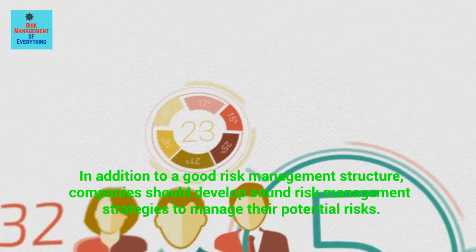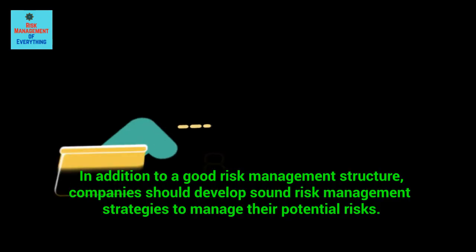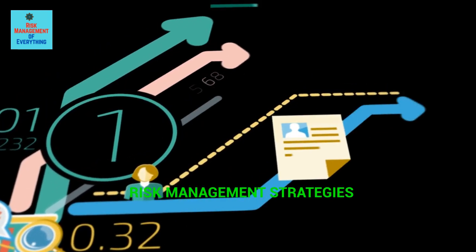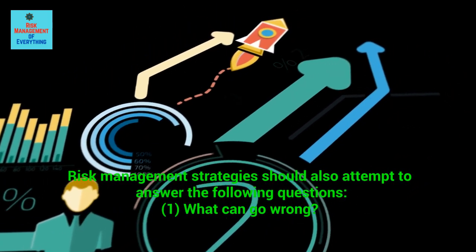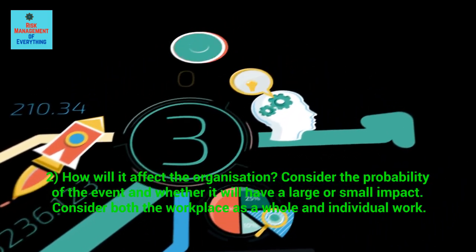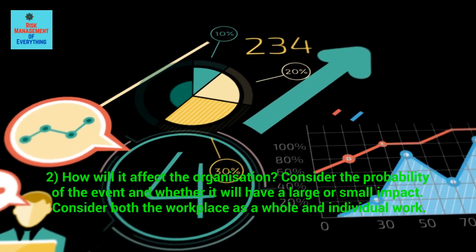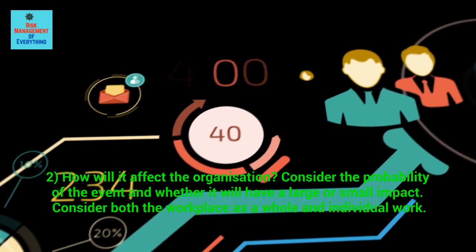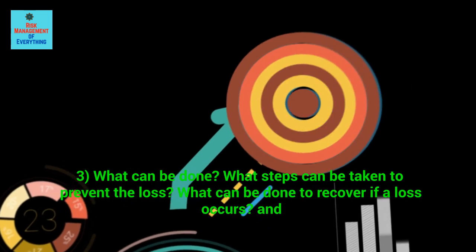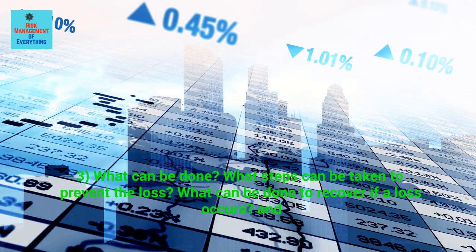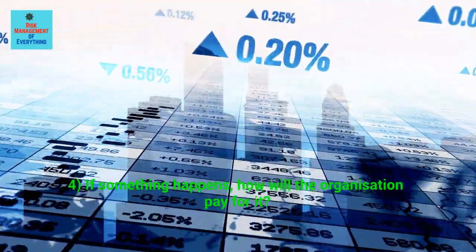In addition to a good risk management structure, companies should develop sound risk management strategies to manage their potential risks. Risk management strategies should attempt to answer the following questions: 1. What can go wrong? 2. How will it affect the organization — consider the probability of the event and whether it will have a large or small impact, considering both the workplace as a whole and individual work. 3. What can be done? What steps can be taken to prevent the loss? What can be done to recover if a loss occurs? 4. If something happens, how will the organization pay for it?